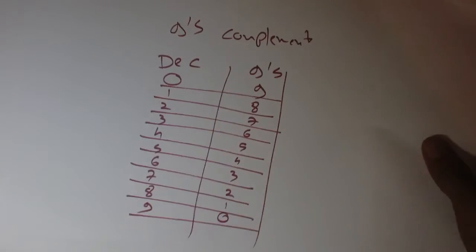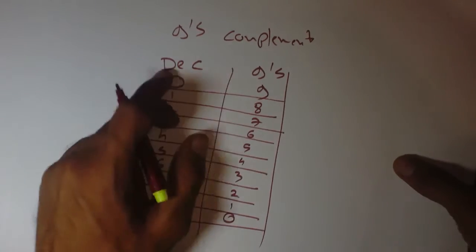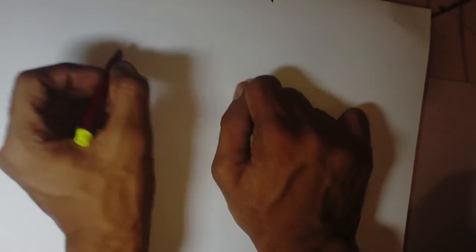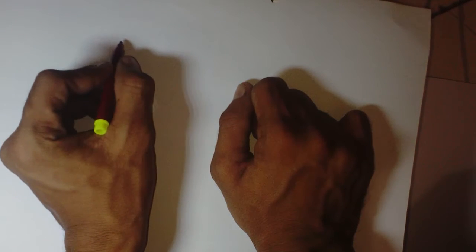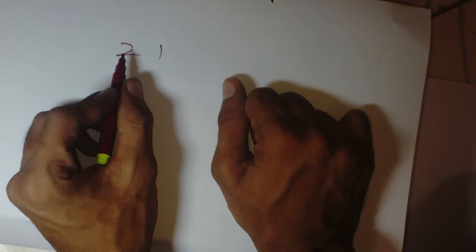Hello people, welcome to this tutorial. In the last tutorial we have seen nine's complement of decimal numbers, but what if the decimal number is more than one digit long? What if the decimal number is 21? In this case, we